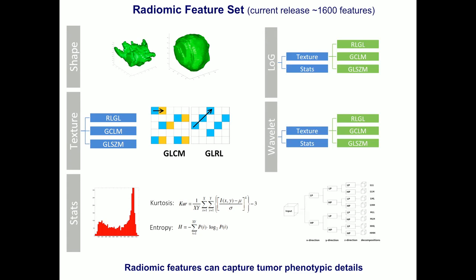We also apply different filterings to the original image using, for example, Laplacian of Gaussian or Wavelets, focusing on different frequency domains in the image to extract different features. Using these filter techniques, we have the most optimal performance, likely because we can remove noise effects, and because these filter methods have specifics for assessing distinct phenotypic traits.